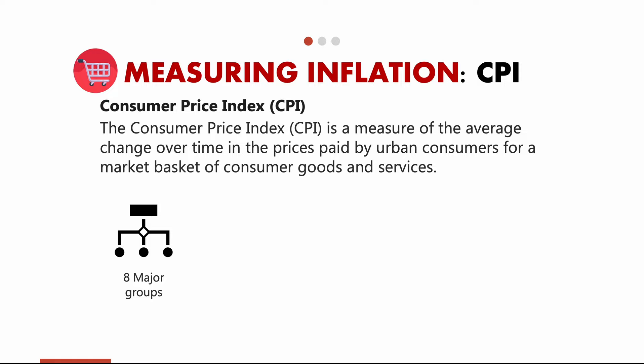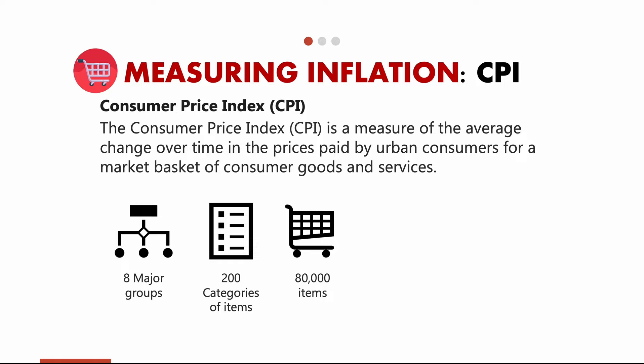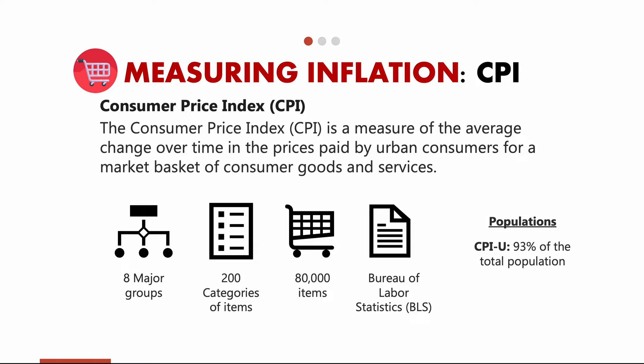The features of CPI include a market basket comprised of eight major groups, with about 200 categories of consumer products and services, and about 80,000 items that are price-recorded each month. The CPI index is managed by the Bureau of Labor Statistics, or BLS. CPI covers two population groups: CPI-U, which covers all urban consumers — approximately 93% of the total population — and CPI-W, which covers urban wage earners and clerical workers, representing 29% of the population.